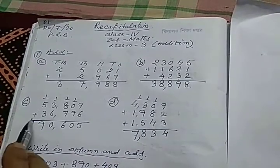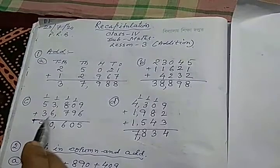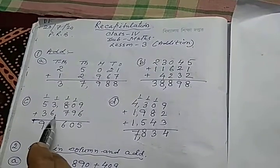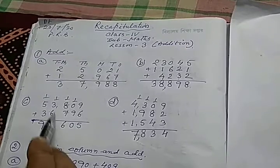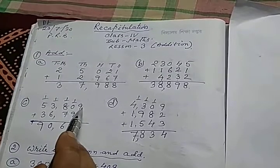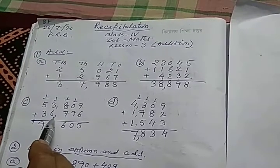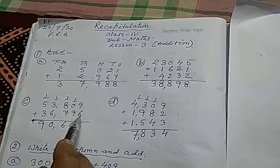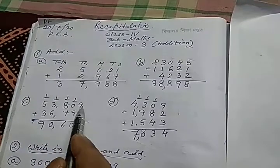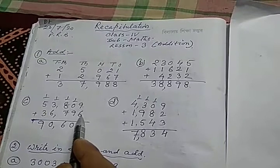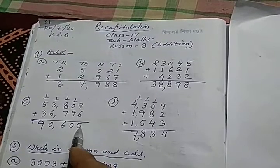Now we will revise some carry plus. Here are two numbers, 53,809 and 36,796. We see that first number 9 and 6, after adding 9 and 6, we have 15.